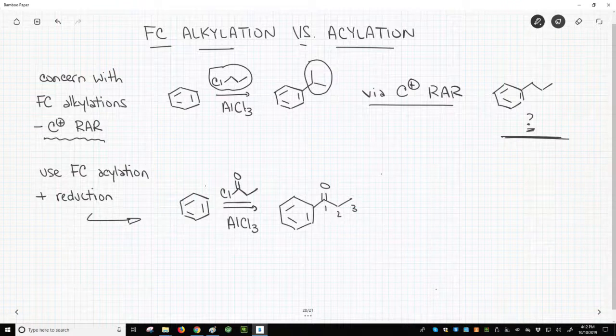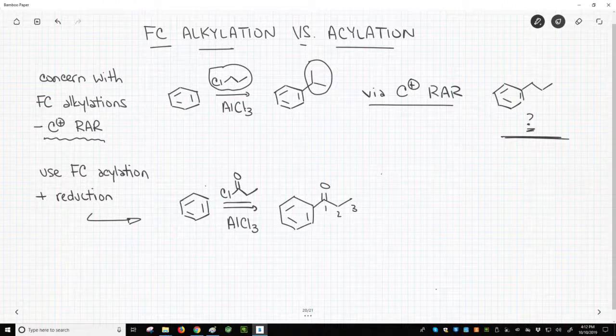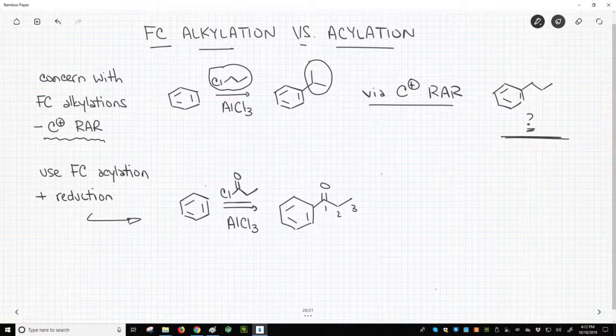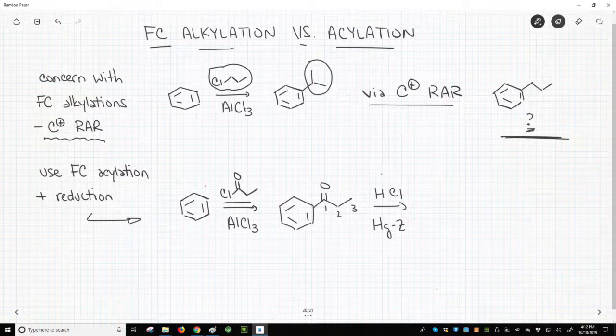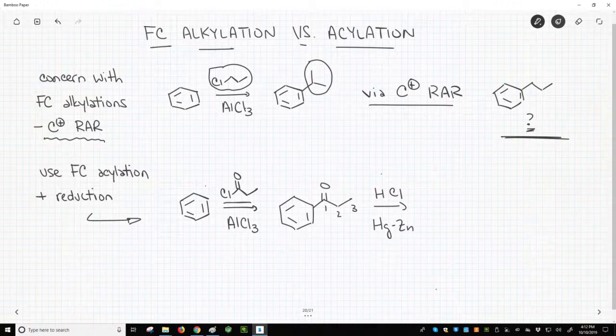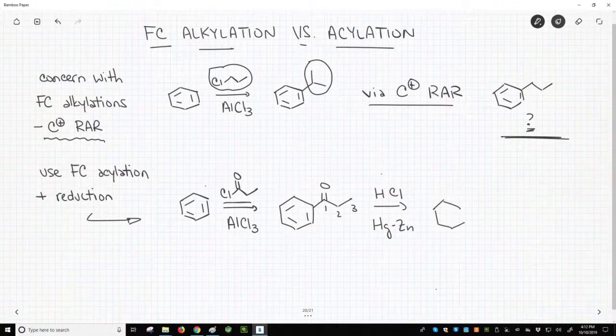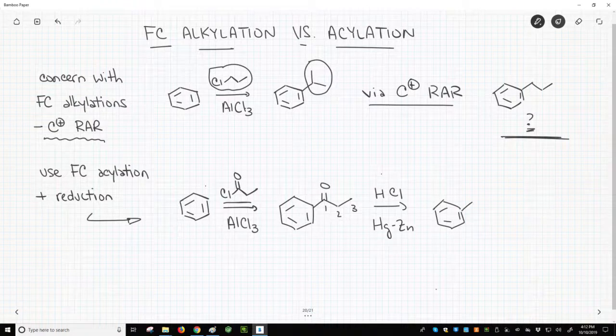All we need to do now is reduce the acyl group to an alkyl group. Here is where the Clemmensen or Wolff-Kishner reductions are important. I'll use the Clemmensen reduction to convert the acyl group into a propyl group. That will give our desired propylbenzene.